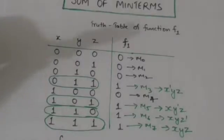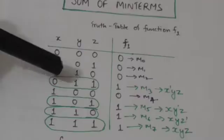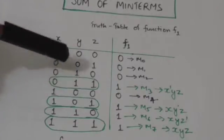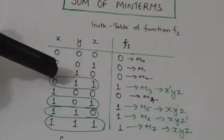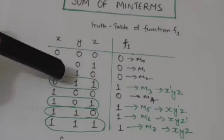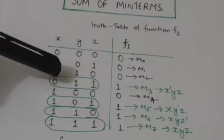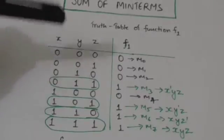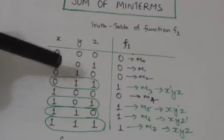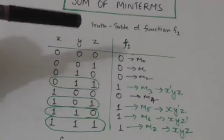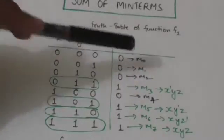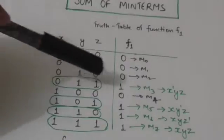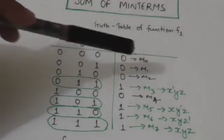Consider the binary number 0 1 1. Its decimal value is 3. The minterm associated with this binary number is m subscript 3, because the decimal value of this binary number is 3.